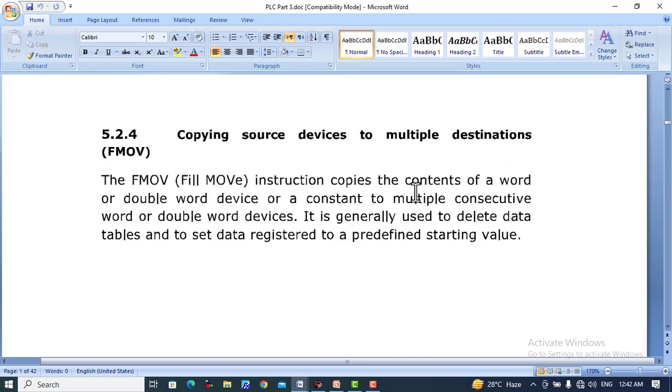The FMOV or Fill Move instruction copies the contents of a word or double word device or a constant to multiple consecutive word or double word devices. It is generally used to delete data tables and to set data registers to a predefined starting value.